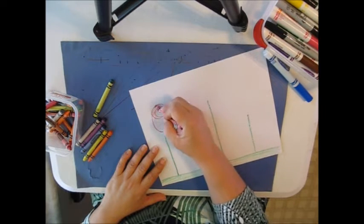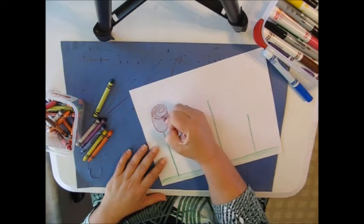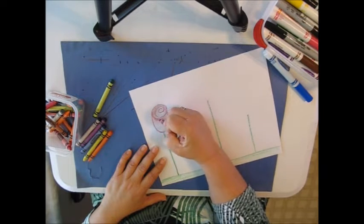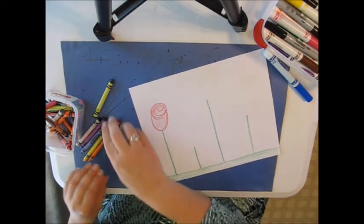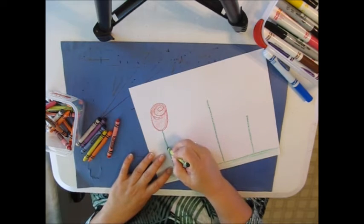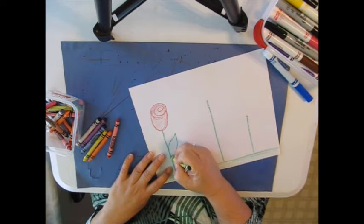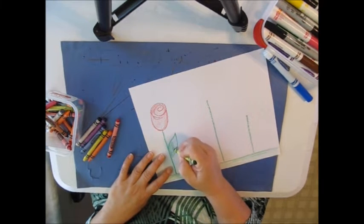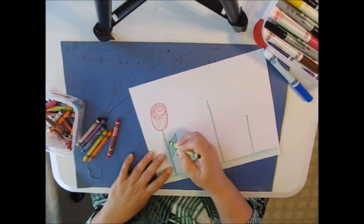I'm using crayons because when we make it rain later, we're going to use the markers. So make sure you're using crayons. I'm going to give it a leaf. Sometimes roses have thorns if you want to put some thorns on it.